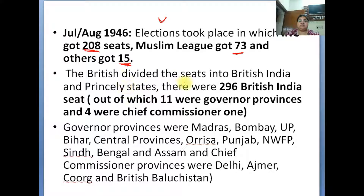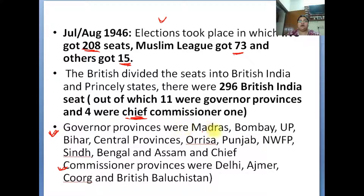The Britishers had divided these seats between British India and the Princely States. British India had 296 seats — from 11 governor provinces and 4 chief commissioner provinces. The governor provinces were: Madras, Bombay, UP, Bihar, Central Provinces, Odisha, Punjab, Northwest Frontier Province, Sindh, Bengal, and Assam. The Chief Commissioner provinces were: Delhi, Ajmer, Coorg, and Balochistan.